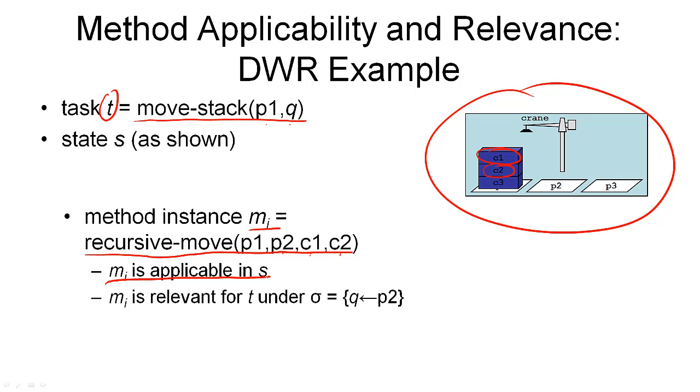And to test for relevance, we've got to see whether we can make the task accomplished by this method the same as the task that we are trying to accomplish. And indeed this is the case, because the task symbol is already the same. It is move-stack that is also accomplished by recursive-move. And the two parameters of the method's tasks are p1 and p2, and p1 is also the first parameter of the task we're trying to accomplish.